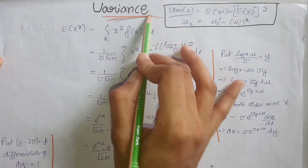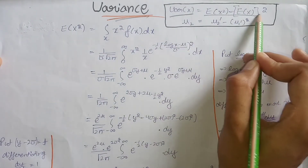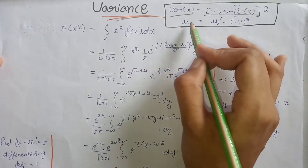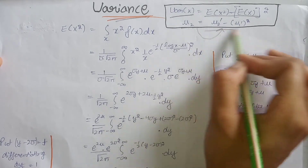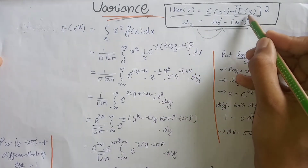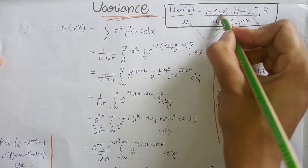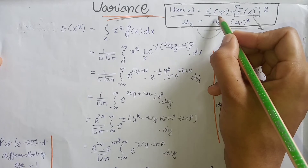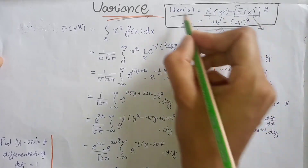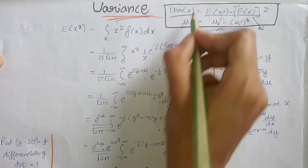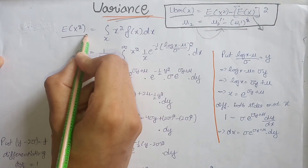Now we calculate the variance of the log-normal distribution. The variance formula in terms of expectations is Var(X) = E[X²] - (E[X])², which in terms of moments about the origin equals the second moment minus the square of the first moment. We already know E[X], so we just need to calculate E[X²].